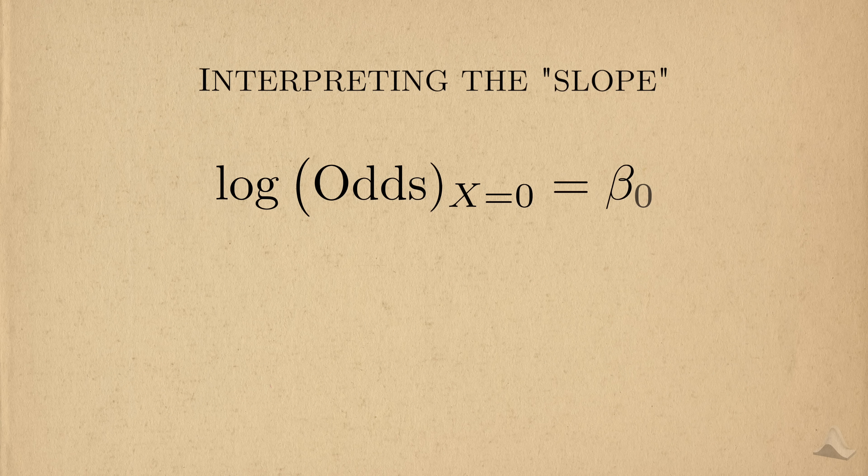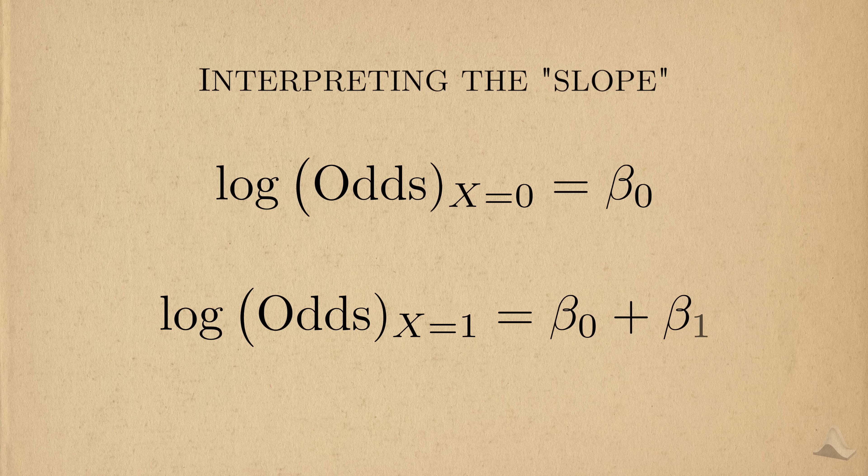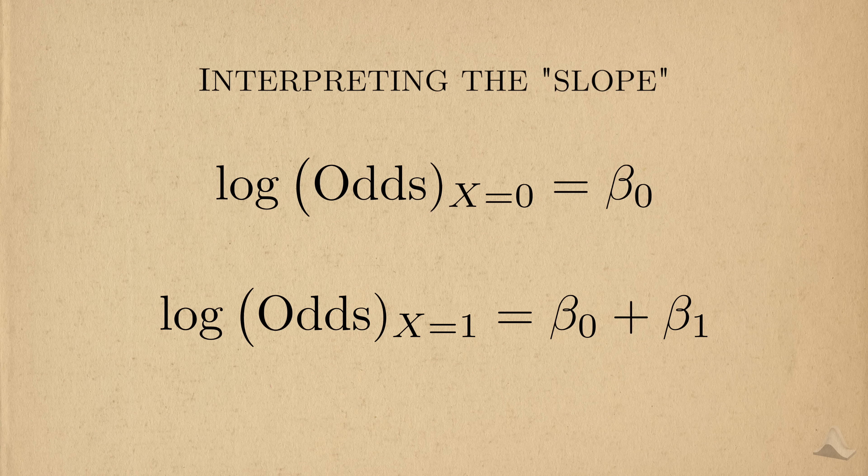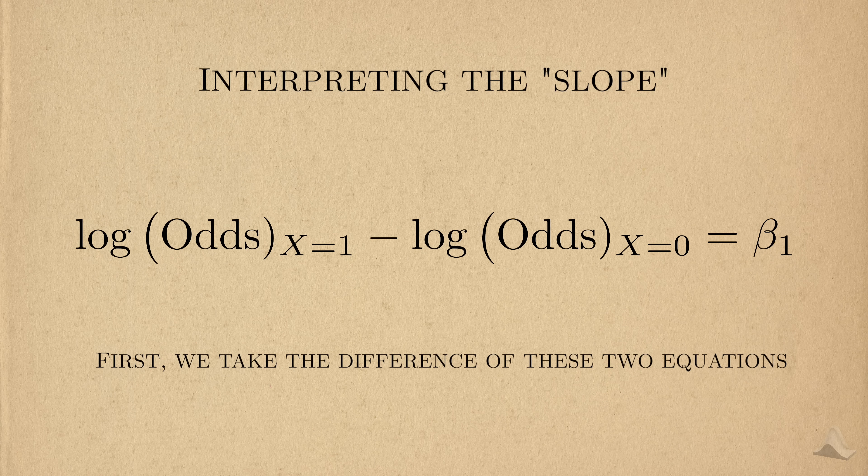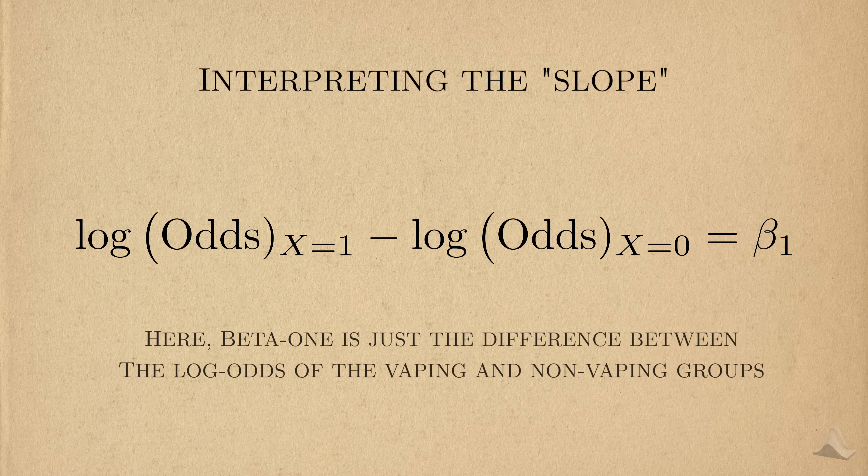To isolate beta 1, we need to do some mathematical manipulation similar to how we did with linear regression. We need to consider two equations, one for the vaping group and another for the non-vaping group. To make the notation a little easier to read, I'll just represent the odds in terms of text instead. To isolate beta 1, we need to subtract the first equation from the second.